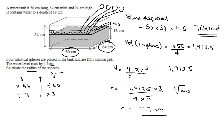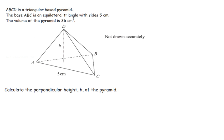Next question. ABCD is a triangular base pyramid. The base ABC is an equilateral triangle. So the sides five centimetres. So again, mark something on the diagram. We know that all the angles will be 60. And if it's equilateral, we know everything's five centimetres. But just make sure we know that 60 as well and that 60 as well. The volume of the pyramid is 36 centimetre cubed. Calculate the perpendicular height.